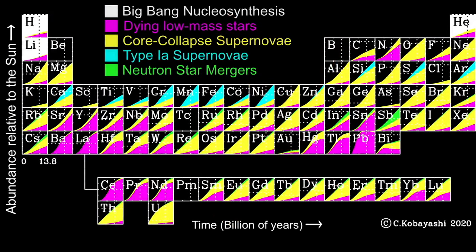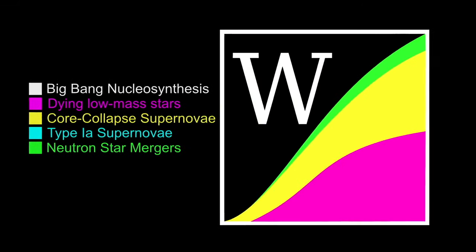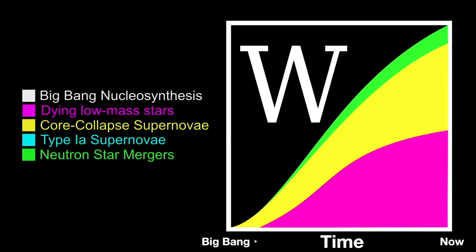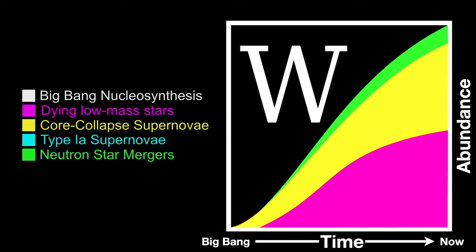This complicated version of the periodic table shows the evolution of the elements through the history of the universe. Each element square contains a tiny chart showing that element's growth over the age of the universe by various processes. About one half of tungsten present today is believed to be produced by dying low-mass stars — the magenta area — and the other half is produced in supernovae, the yellow area. A very small proportion, the green icing on top, is produced in neutron star mergers.